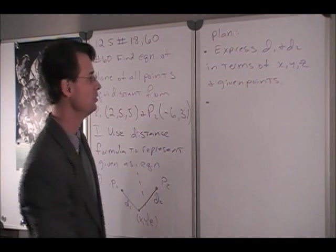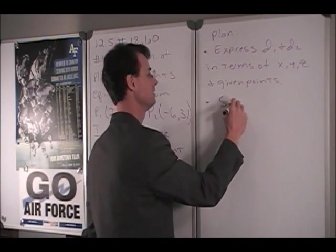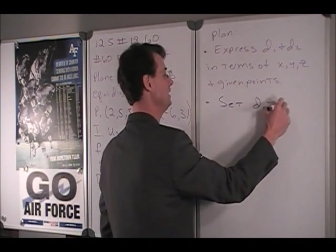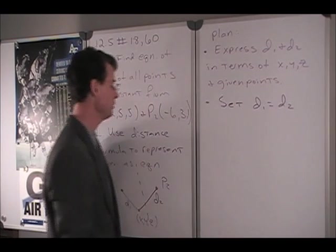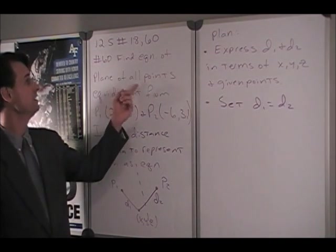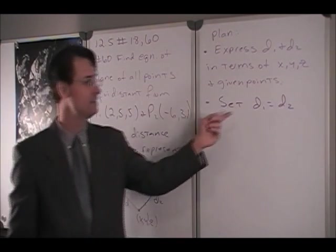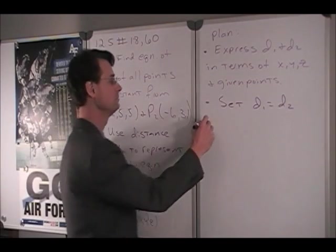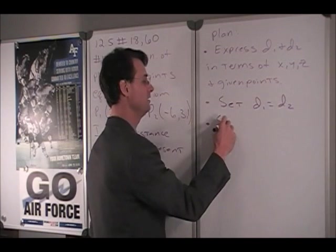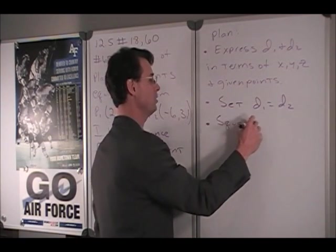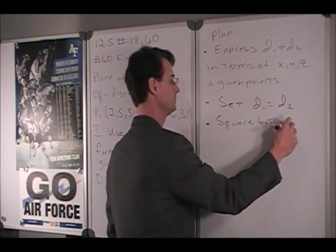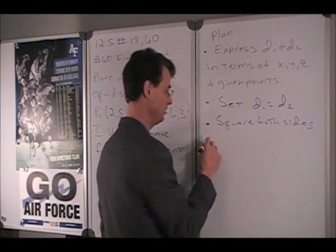And the next thing we can do is we can set D1 equal to D2 because that's our given information. In other words, that's what equidistant means. Equidistant means that the two distances are equal. And then we can square both sides and then we can simplify.